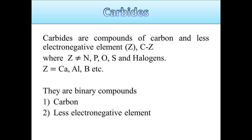Carbides are binary compounds. Binary compounds are formed by two components — here, the first is carbon and the other is a less electronegative element than carbon. So carbides are binary compounds formed by carbon and a less electronegative element.